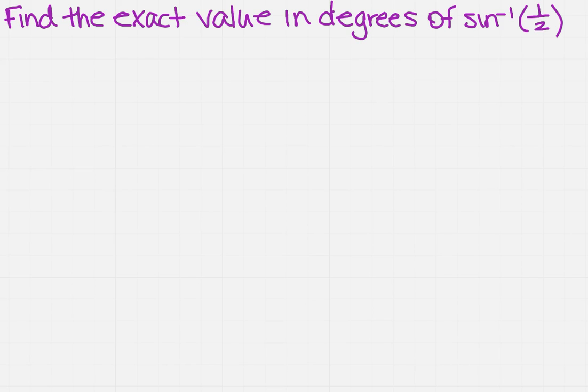Well, if you recall, we have a definition for that, and our definition tells us that the inverse sine of x equals alpha. Now, that's only if the sine of alpha equals x, and remember there's a stipulation for where it can lie, so it's going to be between negative 90 and 90 degrees.